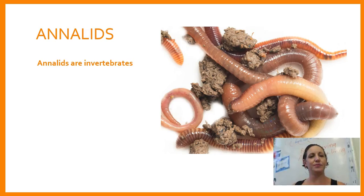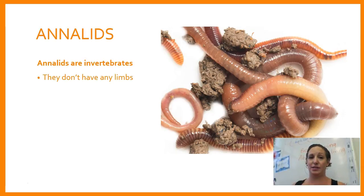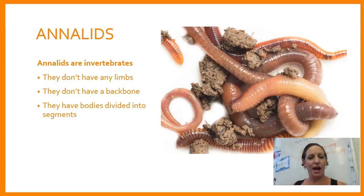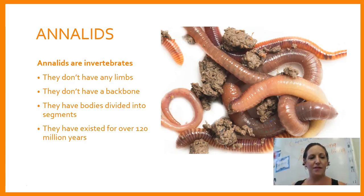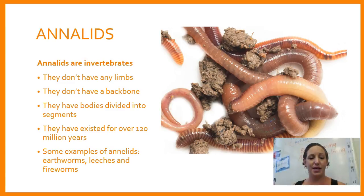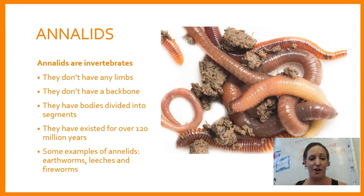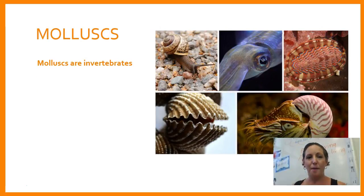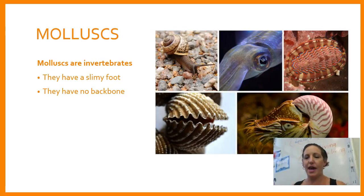Annelids are invertebrates. They don't have any limbs — no arms and no legs — and they have no backbone. Their bodies are divided into segments. They've existed for over 120 million years, and some examples include earthworms, leeches, and fireworms.